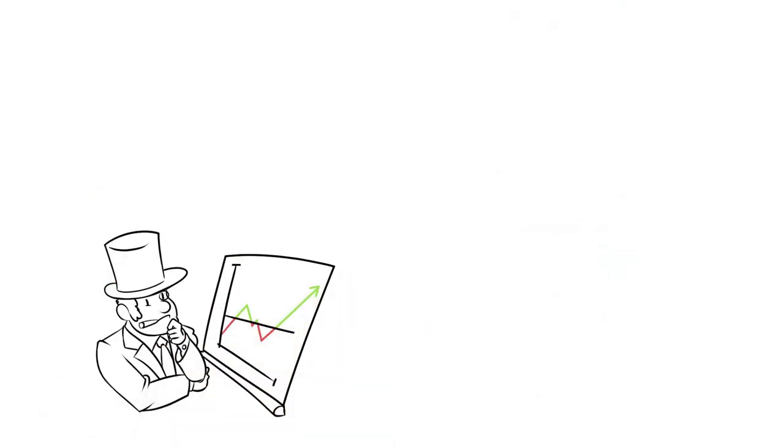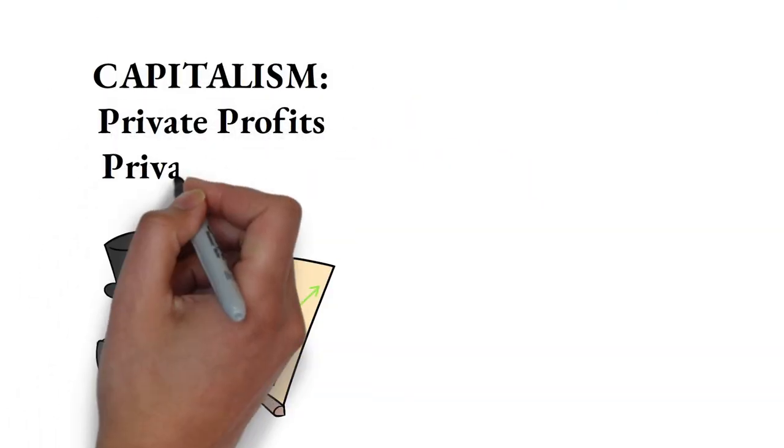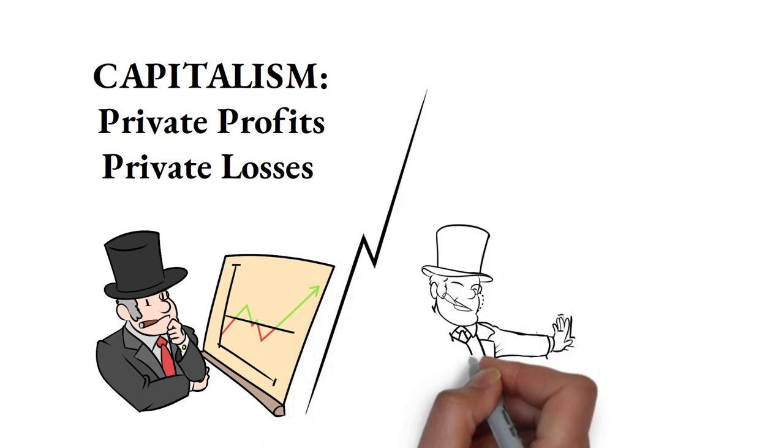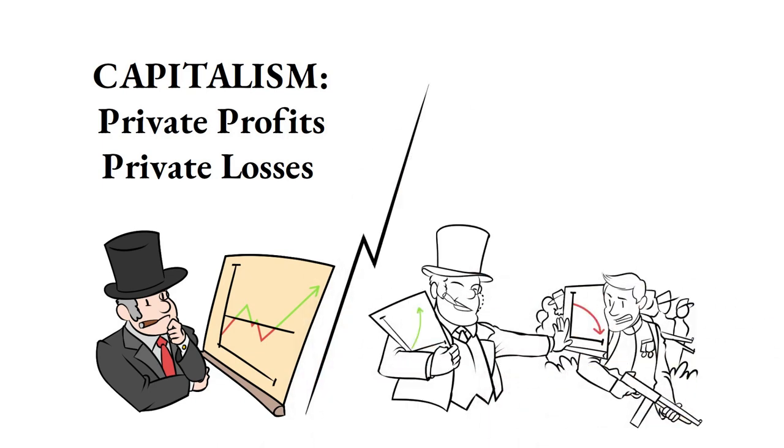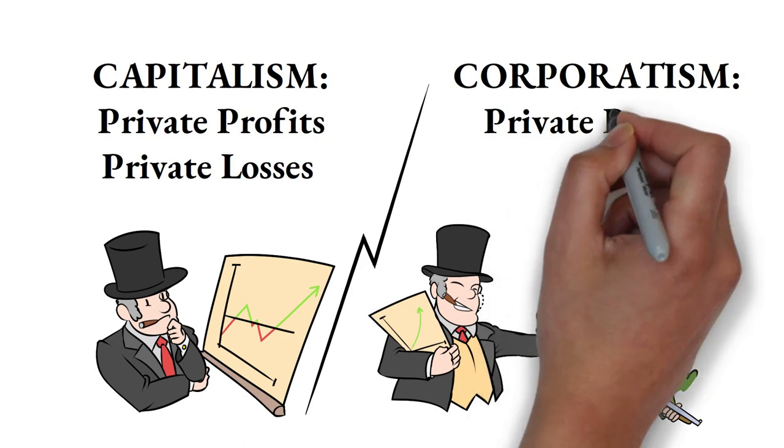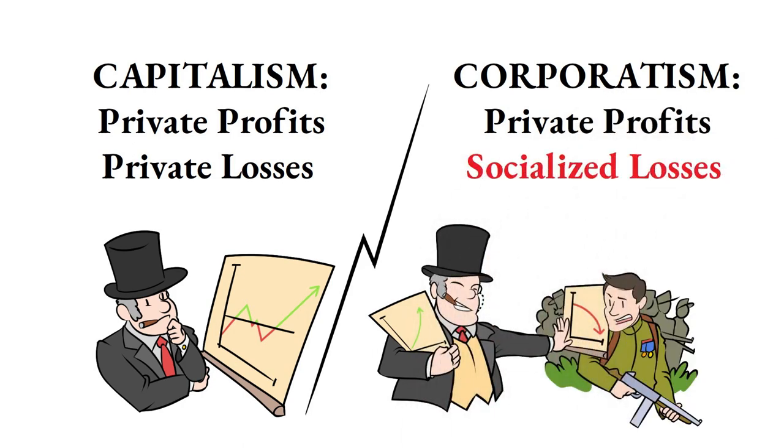Under capitalism, both profits and losses are privatized, but corporatism socializes losses. Butler acknowledged that taxpayers and soldiers bore the costs of the wars that corporations profited from.